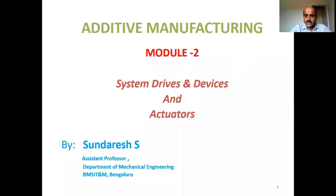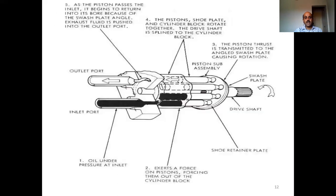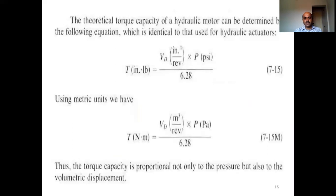In the last class we discussed the basic principle behind the working of a hydraulic motor, three different types of hydraulic motors, the principles behind each type, and different types of piston motors. We ended by discussing the expression used for calculating the theoretical torque capacity of a hydraulic motor.